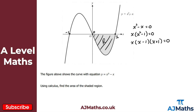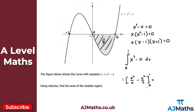So we integrate x cubed minus x with respect to x between 0 and 1. Going term by term: x cubed integrates to x to the power of 4 over 4, and minus x integrates to minus x squared over 2. With limits 0 and 1: substituting the lower limit gives zero, so we only need the upper limit. Substituting x equals 1 gives 1 to the power 4 over 4 minus 1 squared over 2, which is a quarter minus a half.